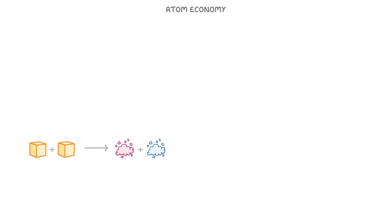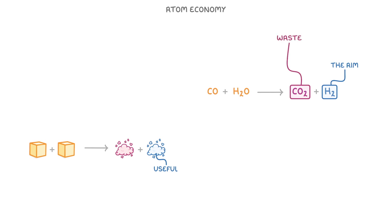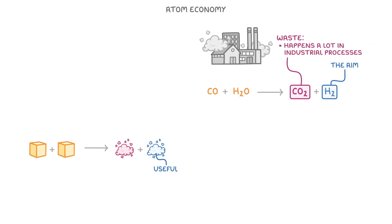When you're making chemicals commercially, the reactions usually make multiple products. However, there's normally only one or maybe two that are actually useful. For example, in this reaction, the aim is only to make hydrogen, so the other product — in this case carbon dioxide — is basically waste. This production of waste products happens a lot in industrial processes, and so it's helpful for companies to be able to quantify it, and know exactly how much of the reactants are actually going to form the useful products that they want.